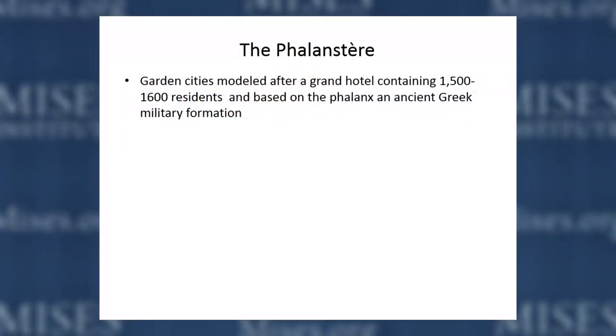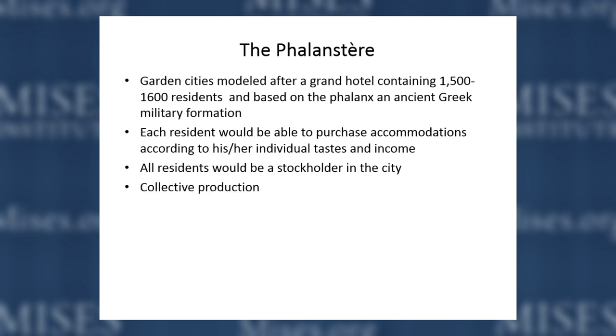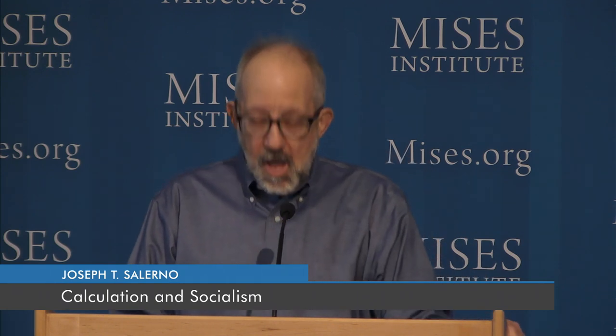In Fourier's vision, there would be garden cities modeled after a grand hotel with 1,500 to 1,600 people, organized according to a Greek and Roman military formation. Each resident could purchase accommodations according to their income. All residents would be stockholders in the city. There would be collective production — everything produced collectively — no exchange, and all would share meals in a communal kitchen. The key is there's really one controlling mind, and no people acting according to their own value scales.